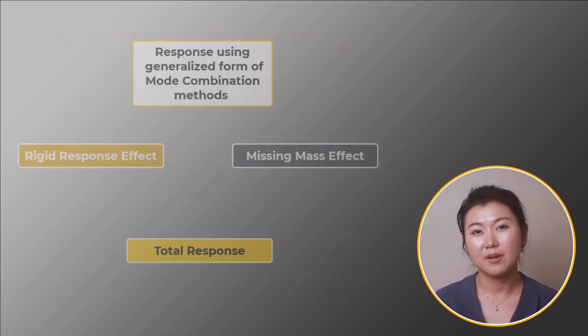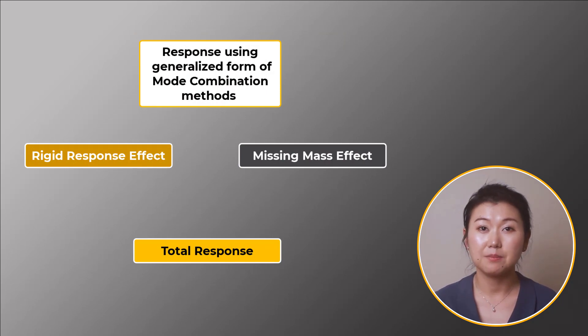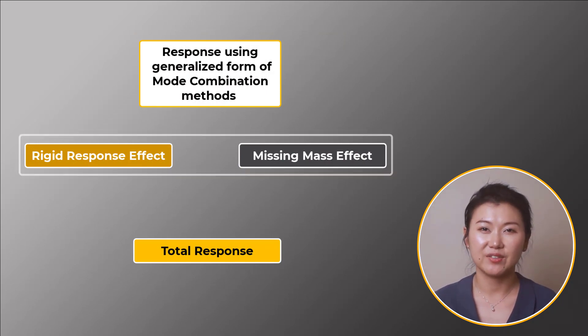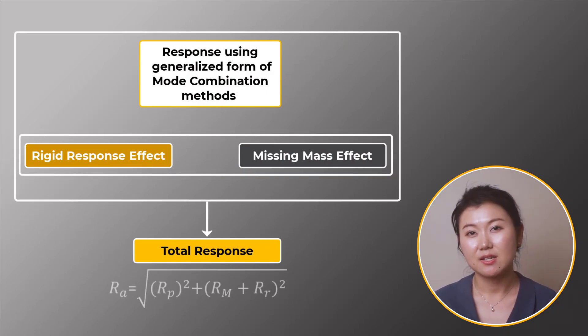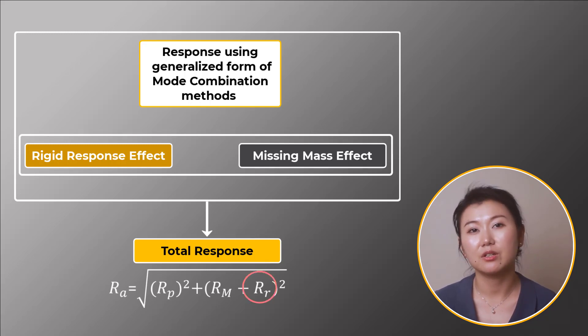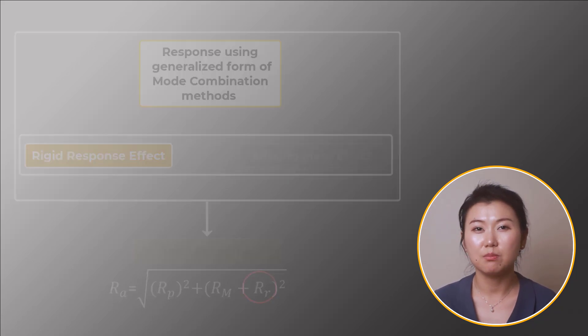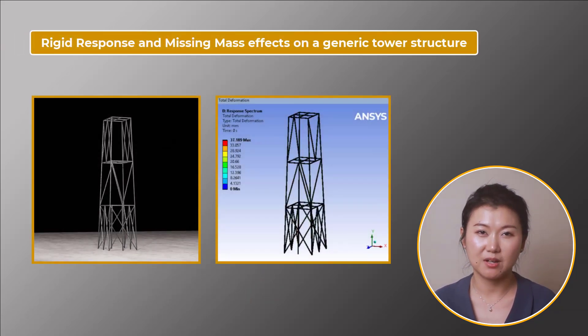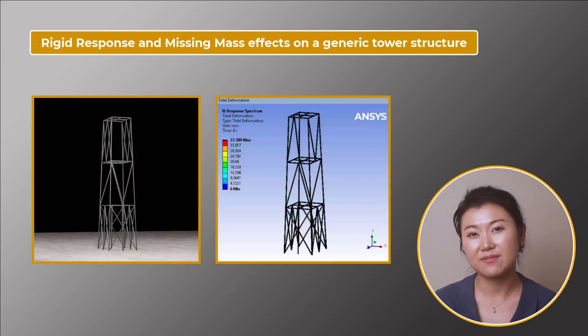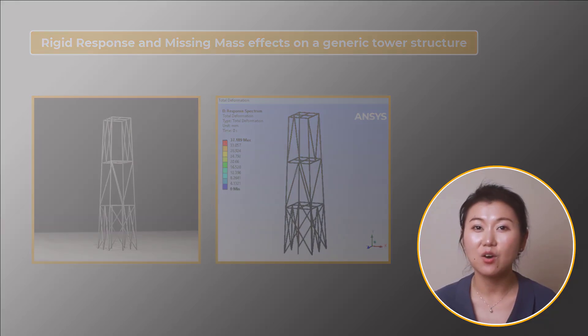It's worth noting that the rigid response and the missing mass effect can be used together if needed. For such cases, the total response equation has another term under the square root sign accounting for the rigid response. Now let's go to a workshop model to check how the rigid response and missing mass features are specified and how they affect the results.